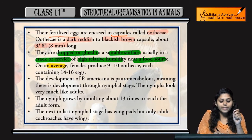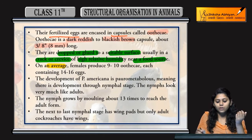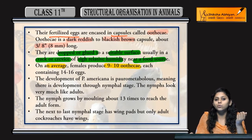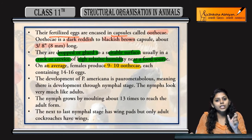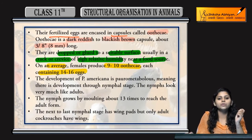On average, a female cockroach produces around nine to ten oothecae, and each ootheca contains 14 to 16 eggs.